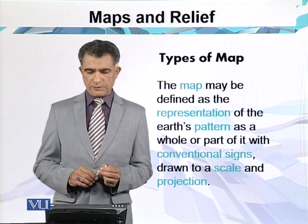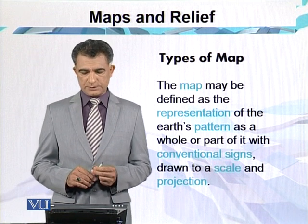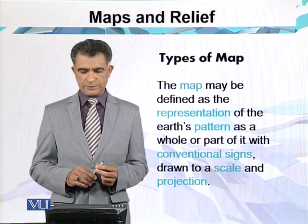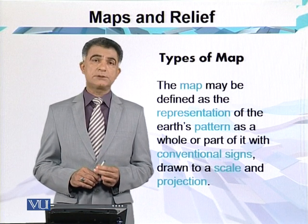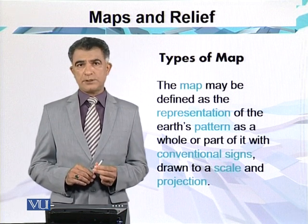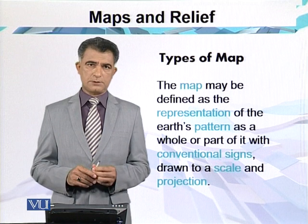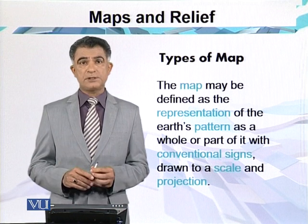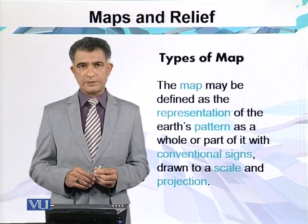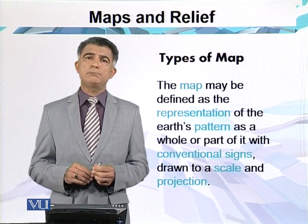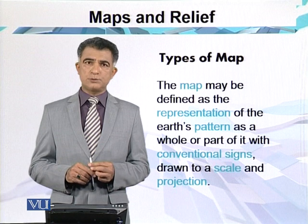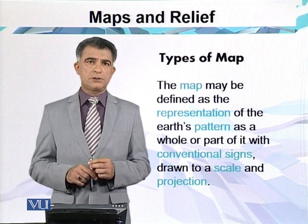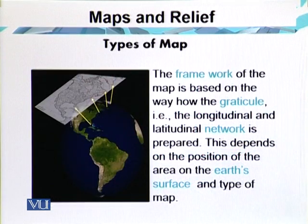Maps may be defined as the representation of the earth's surface as a whole or a part of it, with conventional signs drawn to a scale and projection. It is not only used for making a part of the earth, like a country or a continent, but we can also make a map of the whole world. That is why maps are not only used for a particular area but for the whole area.